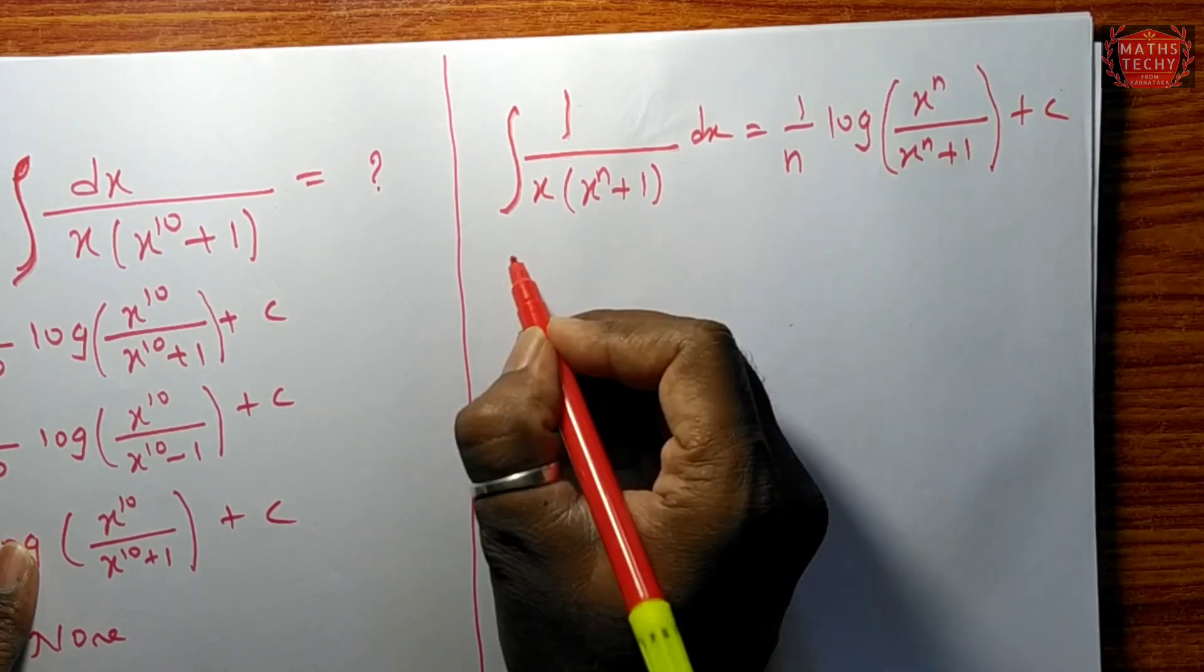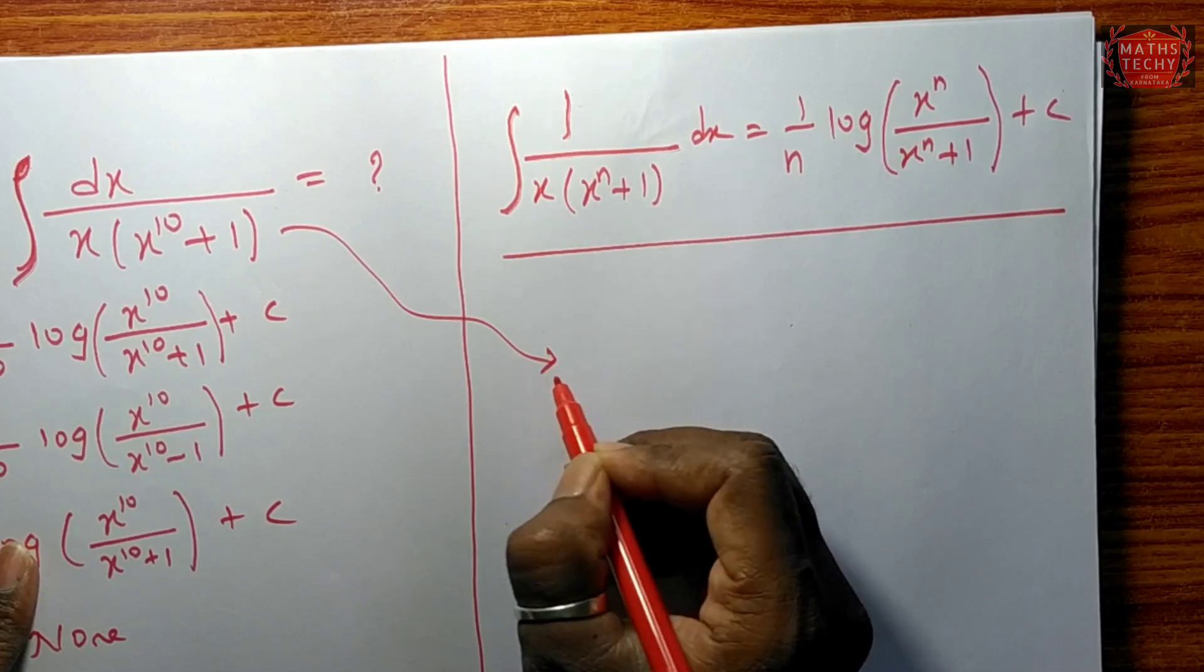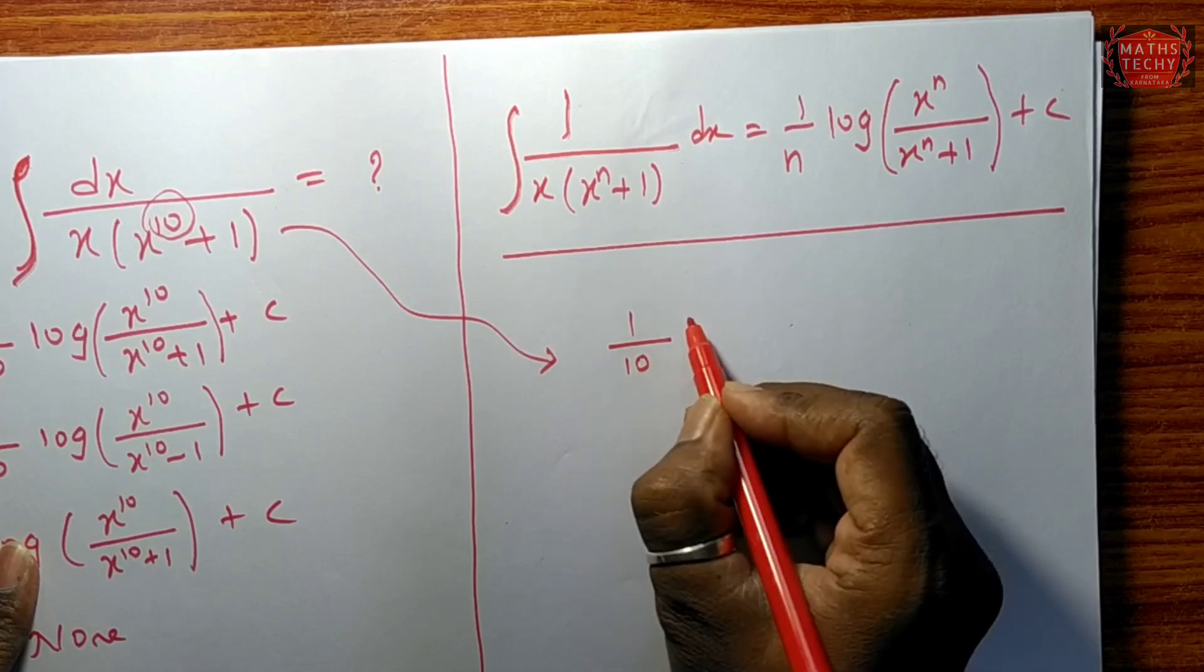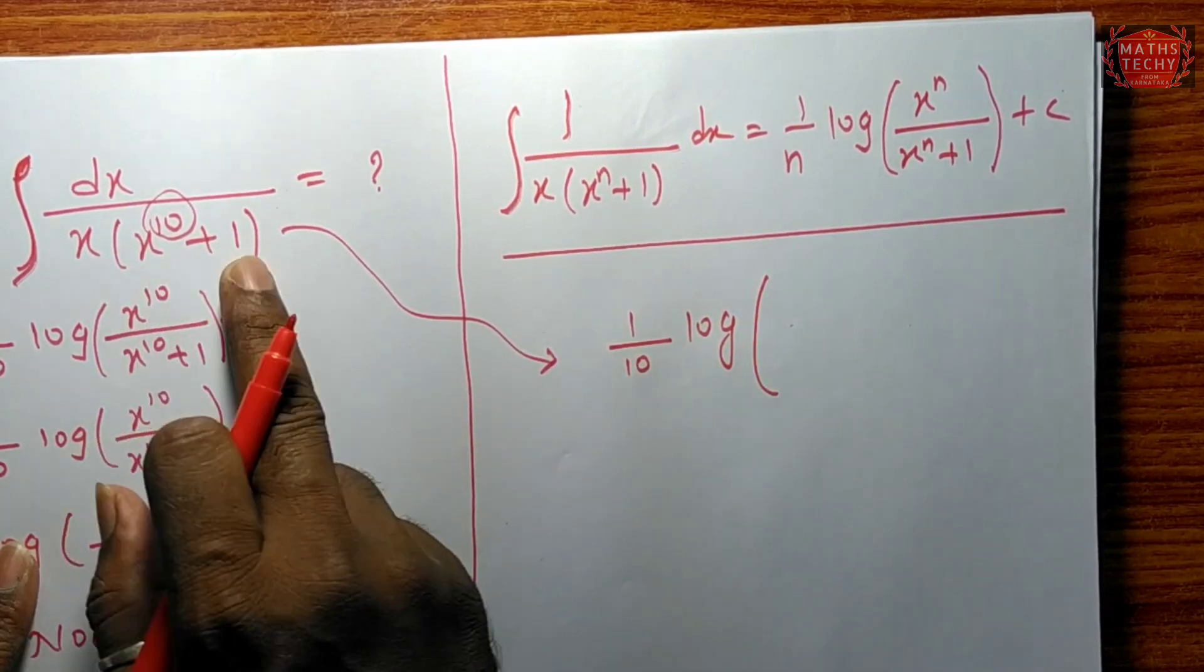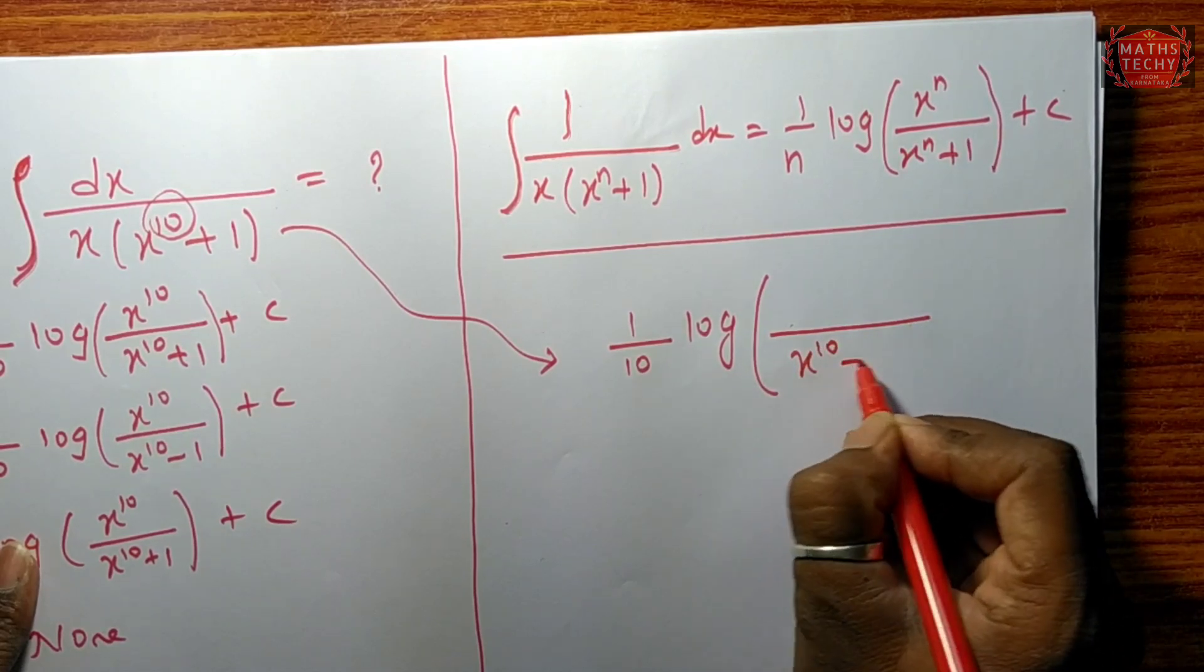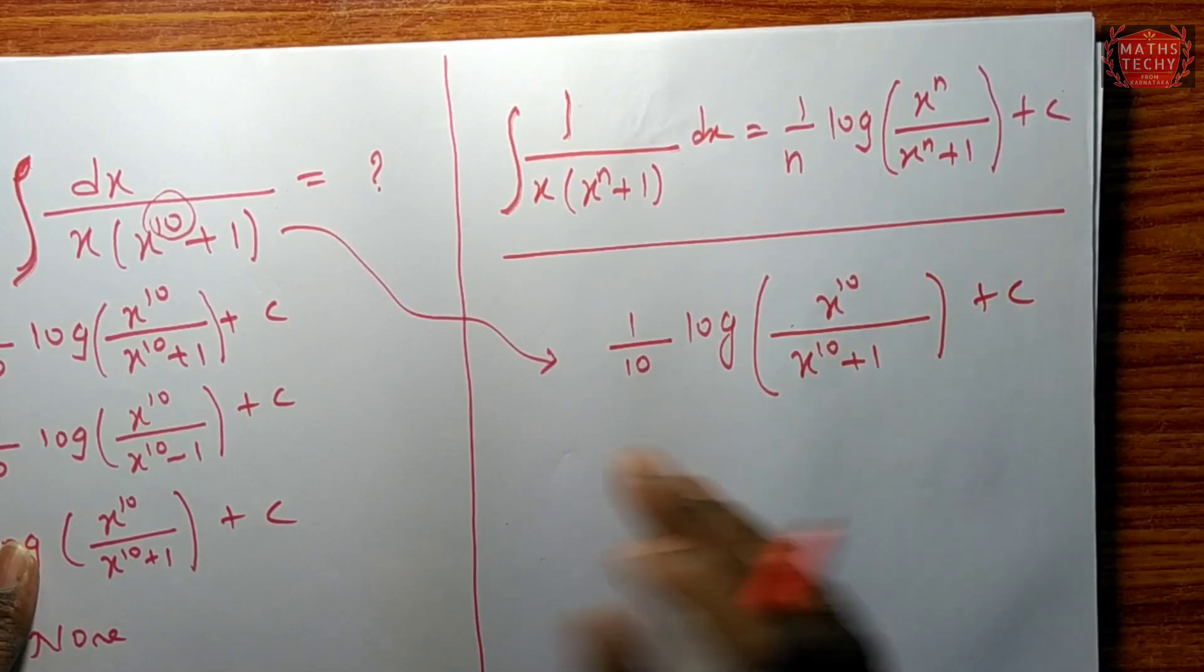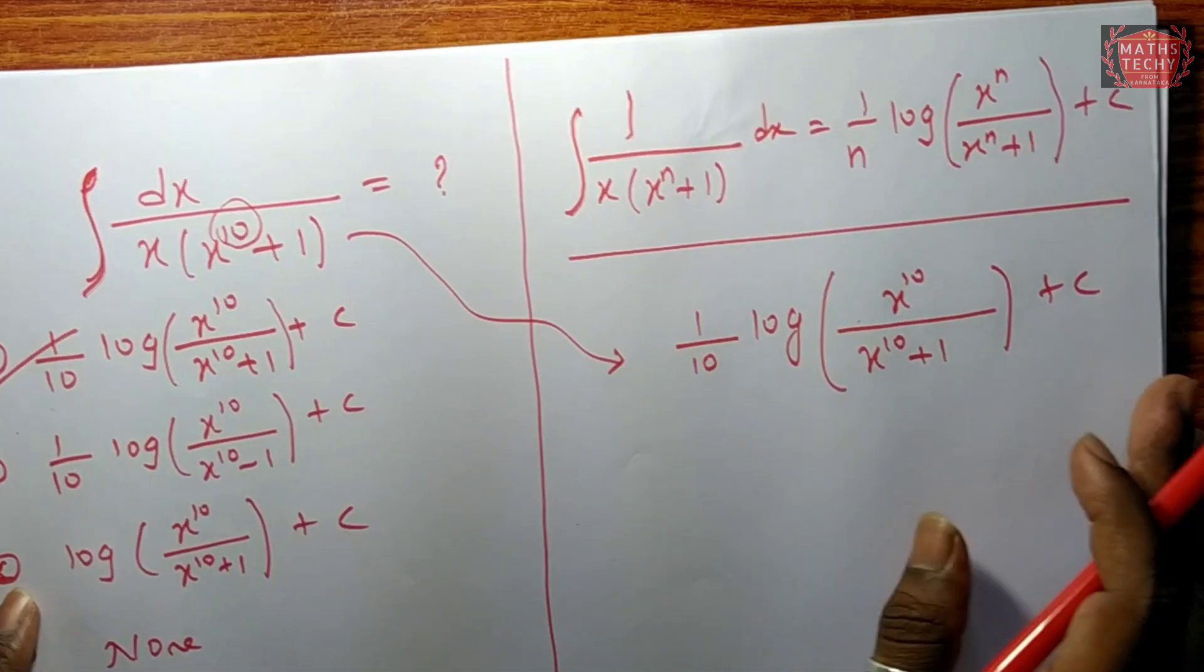So this is your answer. Either you can now apply in this problem. One dividing by 10, so it will be one by ten log of x to the power of ten plus one as it is in the denominator, plus one. x to the power of ten, plus c. So option A is correct here.